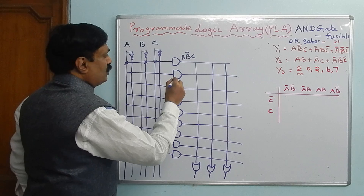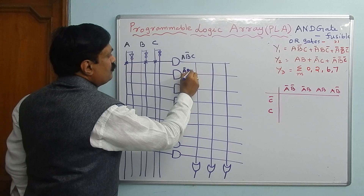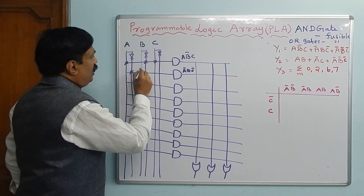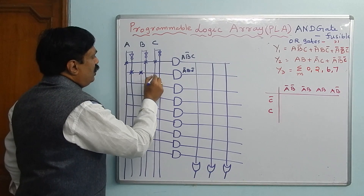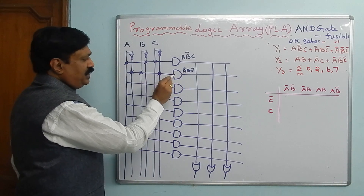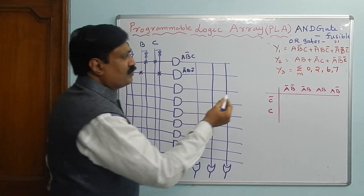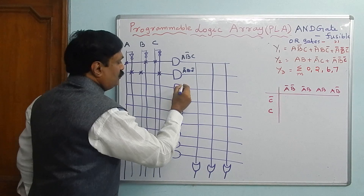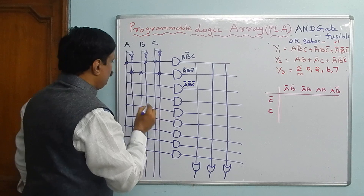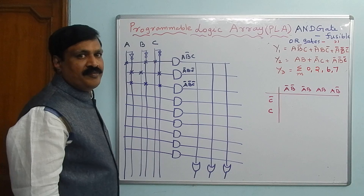The second term is Ā·B·C̄, so you connect Ā, B, and C̄ to the second AND-gate. The third term is Ā·B̄·C̄. Therefore, Ā is connected, B̄ is connected, and C̄ is connected to the third AND-gate.